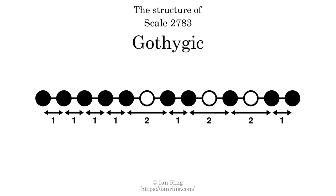The structure of a scale is a description of the interval distance between each successive tone. This scale has a structure of 1, 1, 1, 1, 2, 1, 2, 2, 1.